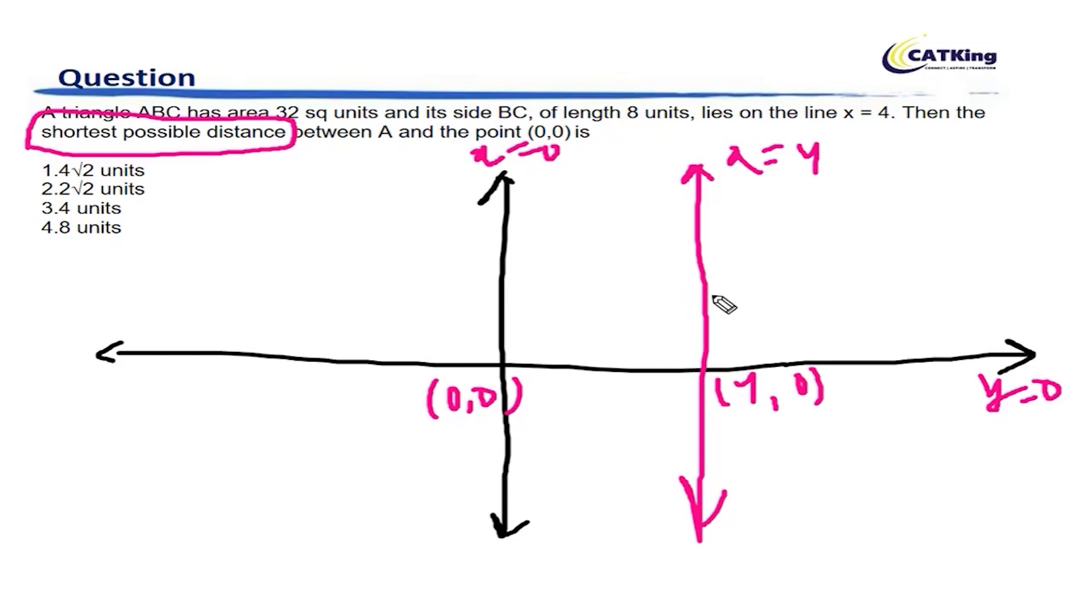What we have to do is place the triangle with the base BC such that the distance between A and the point 0,0 is minimum. For that, what will happen is if we actually draw BC and A here in such a manner that BC is of length 8 units.